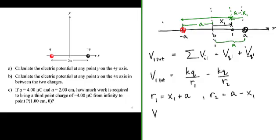Therefore, the total electric potential at point x₁ on the x-axis is equal to kq over r₁, which is x₁ plus a, minus kq over r₂, which is a minus x₁.